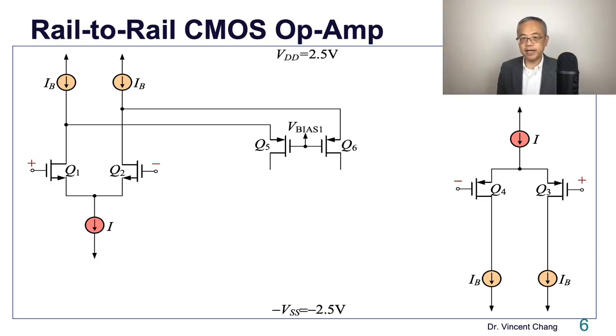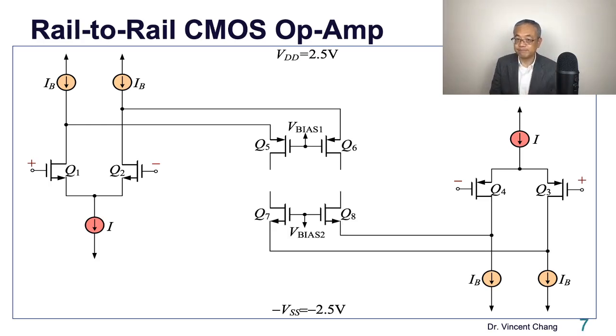And then what? Then we add another pair of cascode transistor. So as you can imagine, it's going to be NMOS, right? Because the first version, the first counterpart is the PMOS cascode. So the second folded cascode is going to be NMOS cascoding pair, which is the Q7 and the Q8. And then we kind of rail to rail. We do something like this.